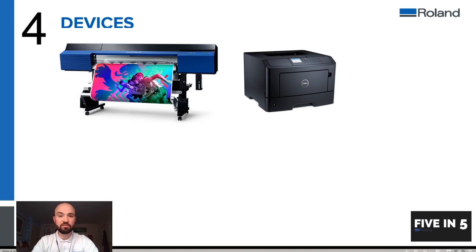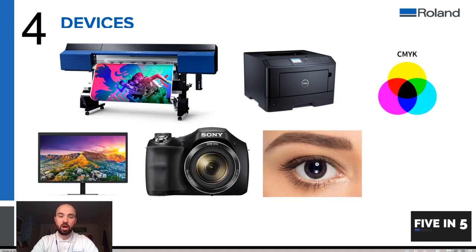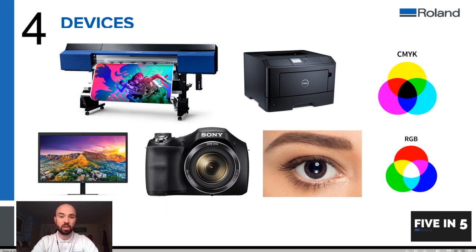When we're talking about devices, different devices can produce different colors. Digital printers, for example, always use a CMYK color mode. There may be additional inks such as a red, a green, an orange, or light colors, but the color mode that these devices use is CMYK, meaning that they have inks which combine in different amounts onto a white substrate to create color. RGB devices such as a monitor, a digital camera, and the human eye use the RGB color mode, meaning that they use, read, or emit different light sources in order to create the different RGB colors.